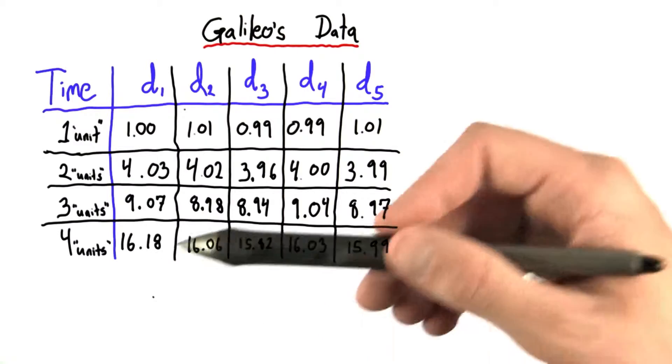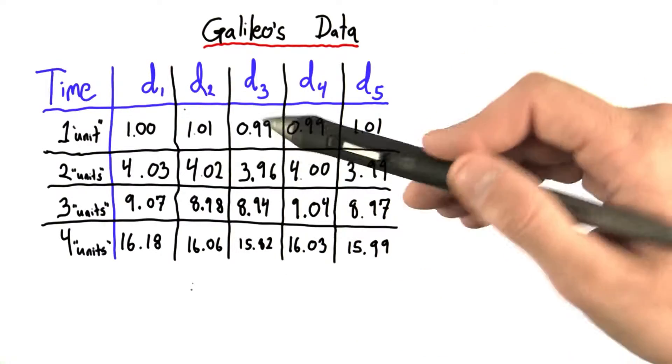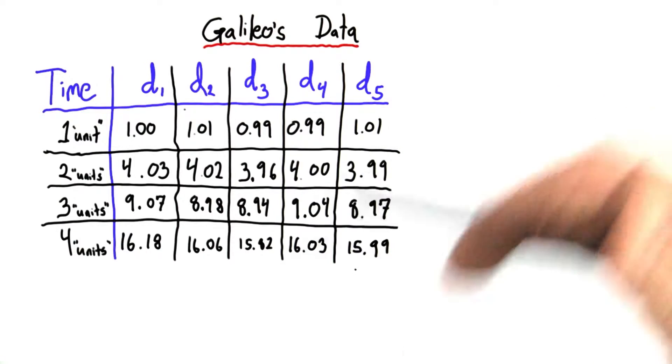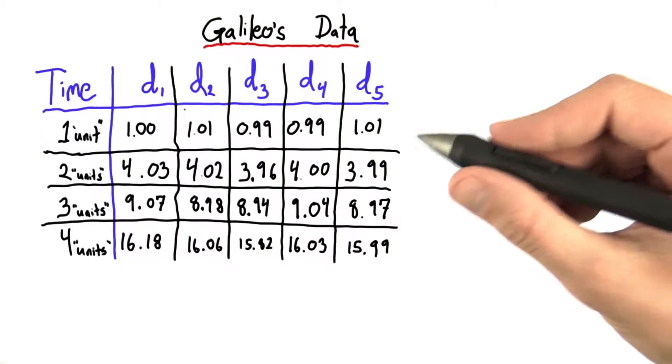Now he was a good scientist, so of course he repeated this process multiple times. And this is the data he got in each of those following repetitions. Now with all this wonderful data, now he has to analyze it.